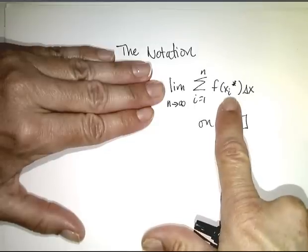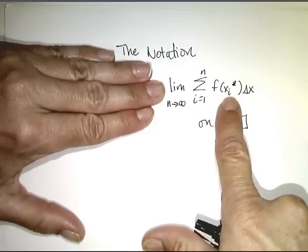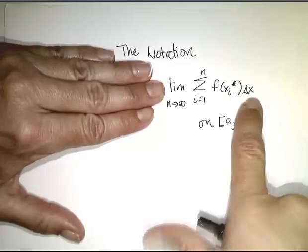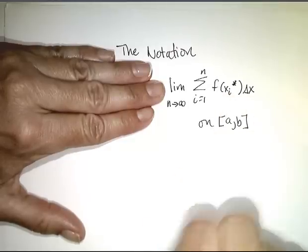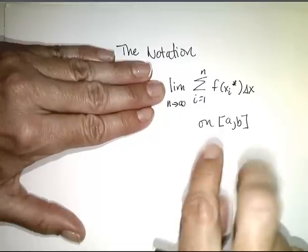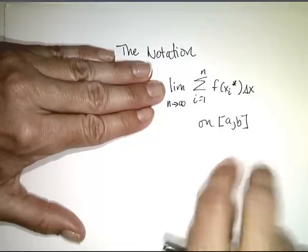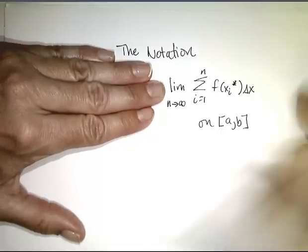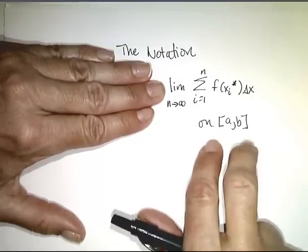Well remember f of xi star was the height of a particular rectangle and delta x was its width. So it was the change in x values from one rectangle to the next. And we defined this on a particular interval a to b.